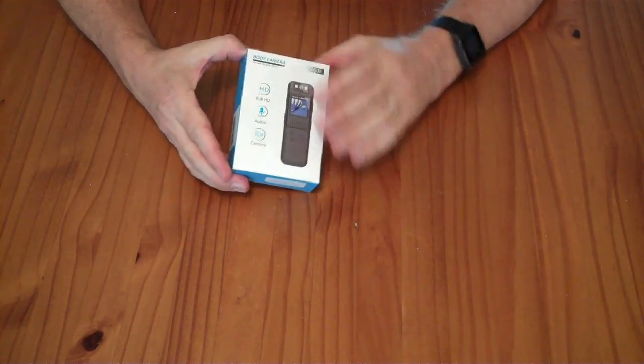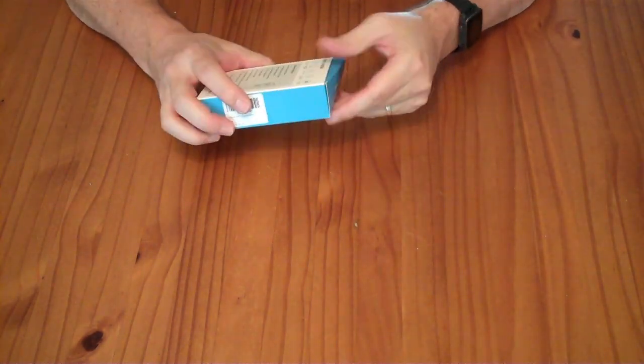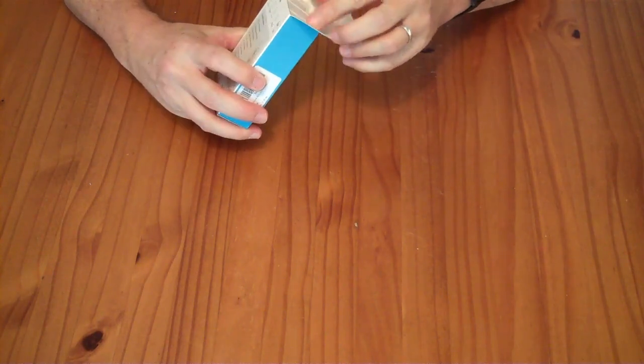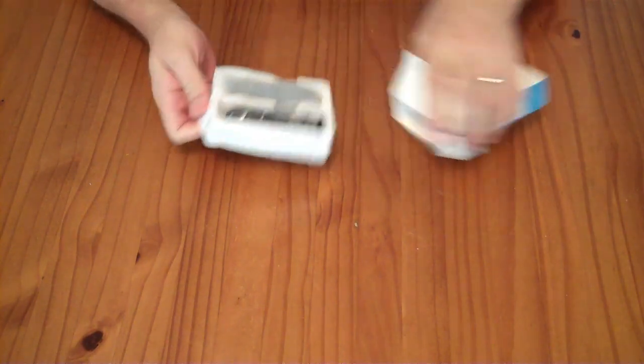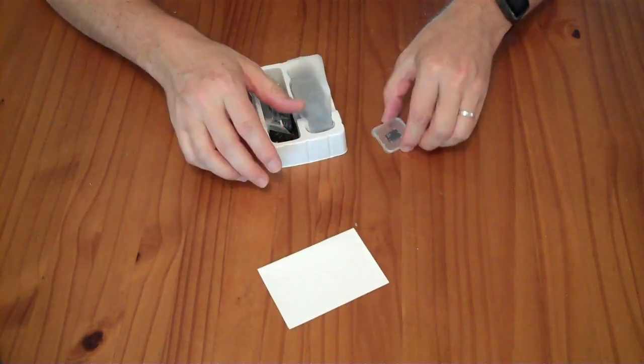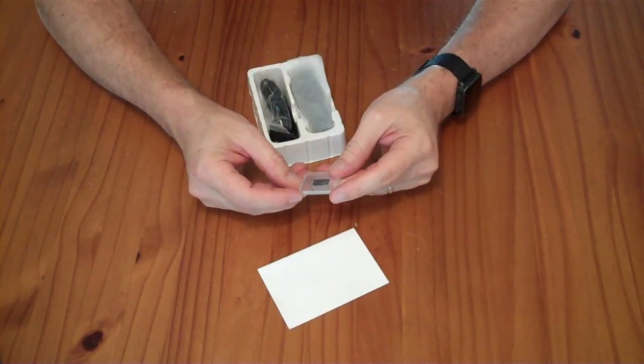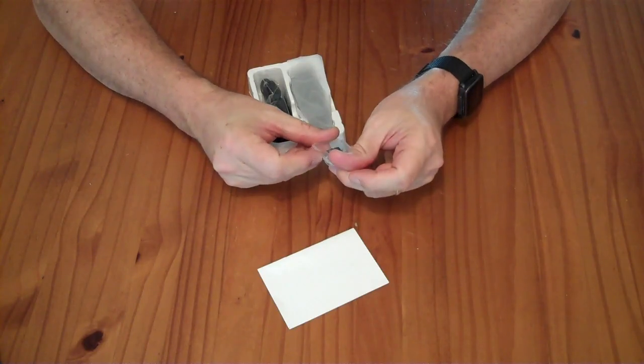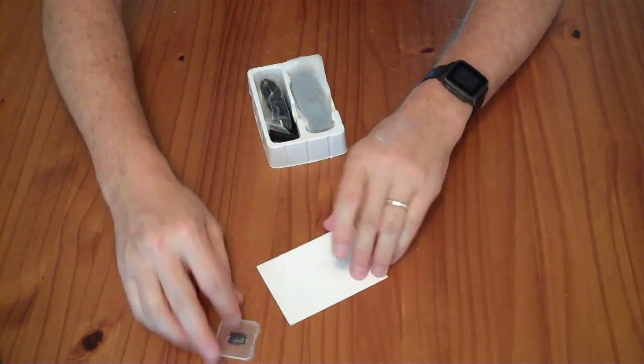This is the McTeever K1 body camera. In the box you have a micro SD card that is labeled C10 64GB, no brand name.